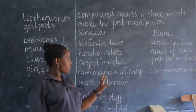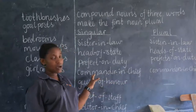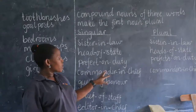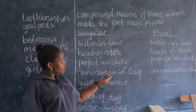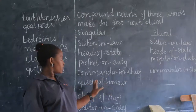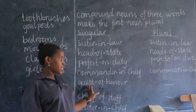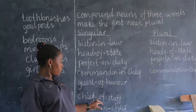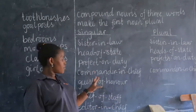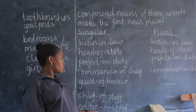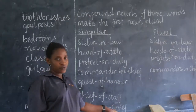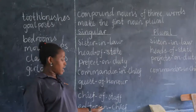Then we have commander-in-chief — the one who leads the army. In Uganda, the commander-in-chief is the president. We say commanders-in-chief. Guest of honor becomes guests of honor. Chief of staff becomes chiefs of staff. Editor-in-chief — the person who leads those who edit newspapers and books — becomes editors-in-chief.